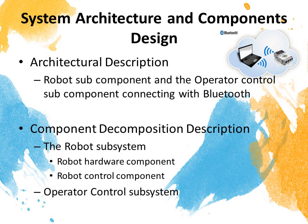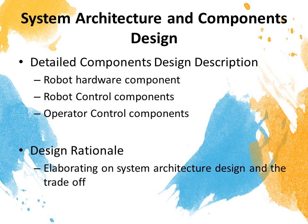Next is system architecture and components design. In this section, there will be an architecture description. The robot subcomponent and the operator control subcomponent connect to each other by Bluetooth, and component decomposition description covers the robot subsystem, robot hardware component, robot control component, and operator control subsystem. There will also be detailed component design description of the two systems, which is the robot subsystem and the operator control subsystem, and the design rationale of the system architecture and the trade-off.